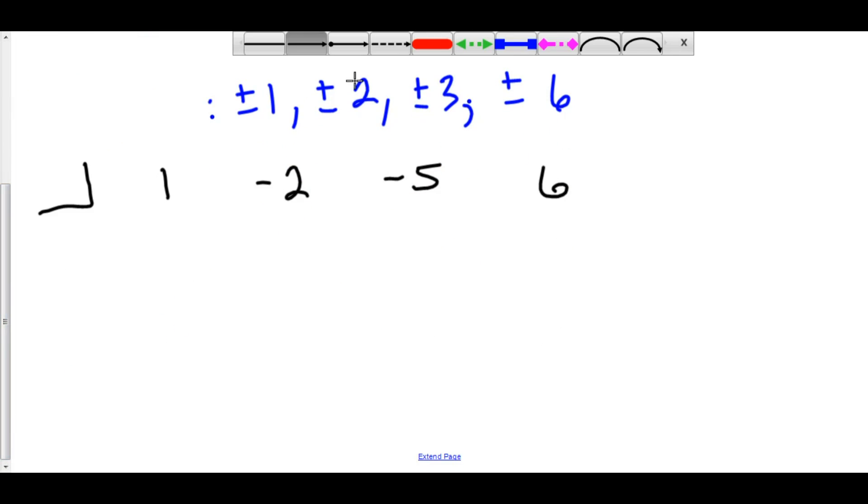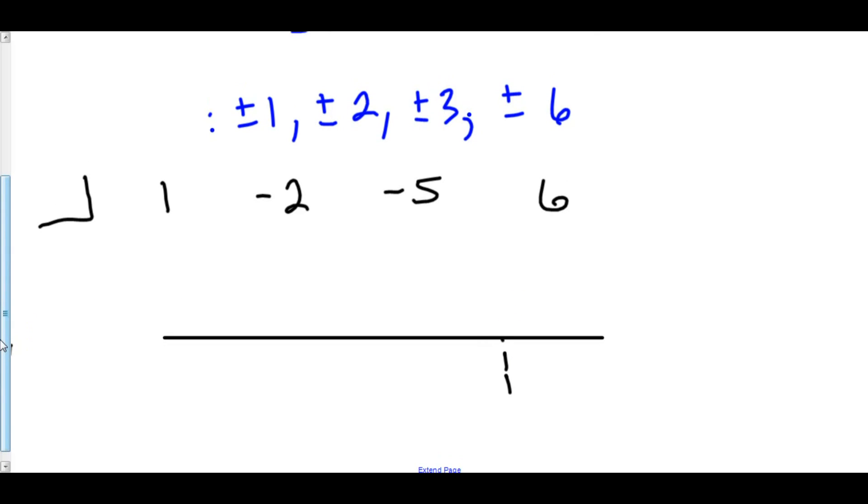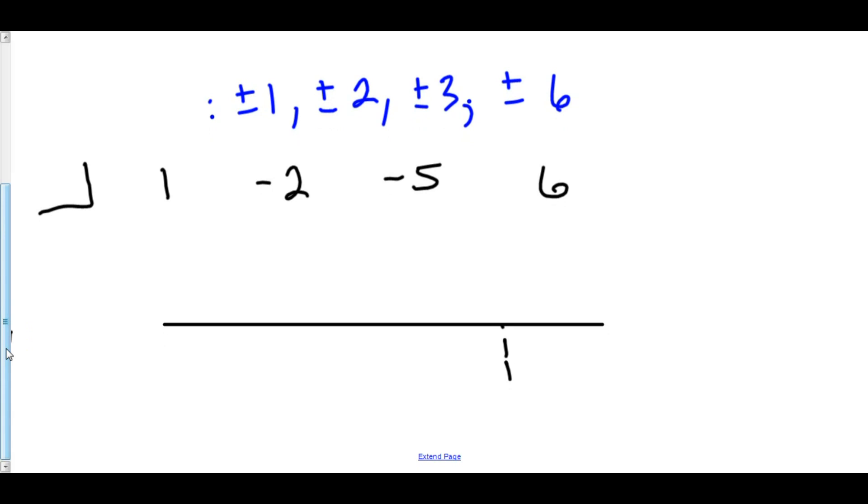After this, we'll see what the remainder is. If the remainder is zero, then that means it is a rational root. If the remainder is not zero, it's not a root. So in red, let's try to put in 1 first and see if 1 is a root.